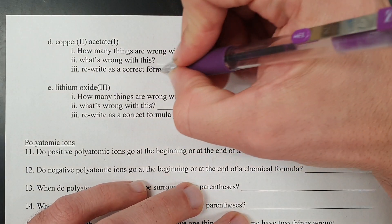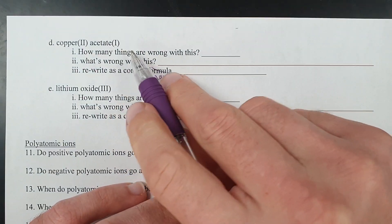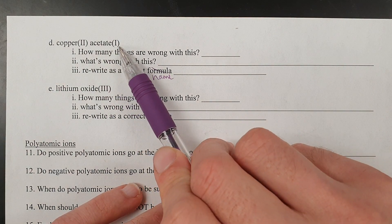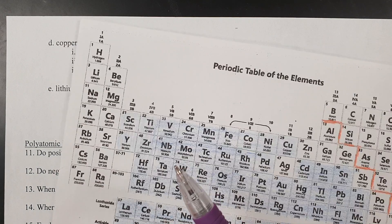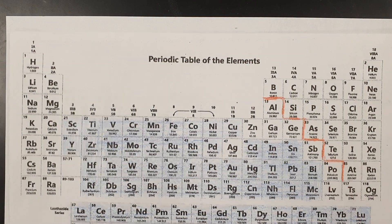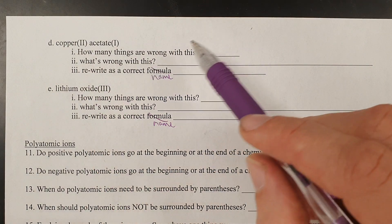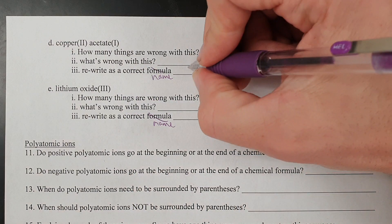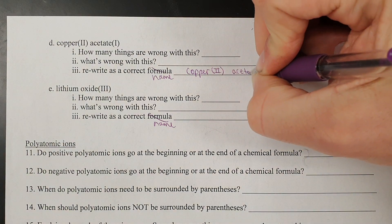Let's look at some others, focusing on the correct name. What's wrong with copper(II) acetate(II)? The main thing wrong is that acetate is not a metal, therefore it does not get a Roman numeral. Roman numerals are only for metals. Metals are always cations, which means they always go first, never on the second part. Acetate isn't an element anyway — Roman numerals are for elements. One thing is wrong: no Roman numeral on the acetate. The correct name is copper(II) acetate.